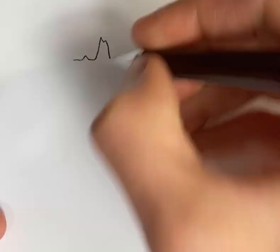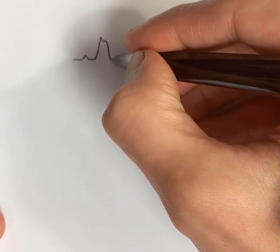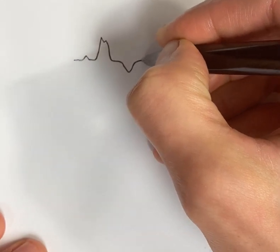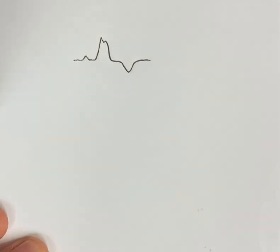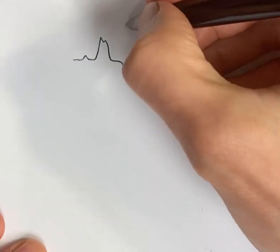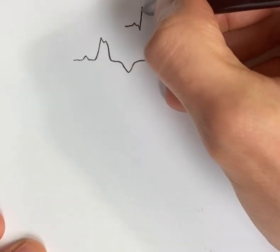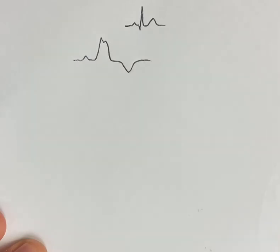an abnormally wide QRS, or a paced rhythm, the T wave should be expected to point opposite of the QRS, as opposed to our normal narrow QRS T wave in the same direction.